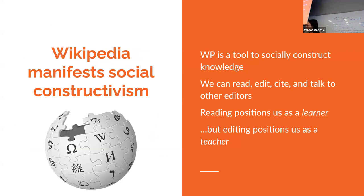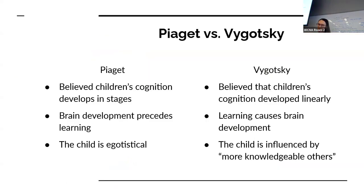Does anybody have any questions or thoughts? Piaget is more about the individual, and Vygotsky is more into the social. When you browse Wikipedia, it is an individual activity. But when you interact and come to an event like this, it becomes social. The social part of learning is not just reading Wikipedia, but intervening, adding content, and talking to others. We want people to become social in their interactions with Wikipedia instead of just passively learning.